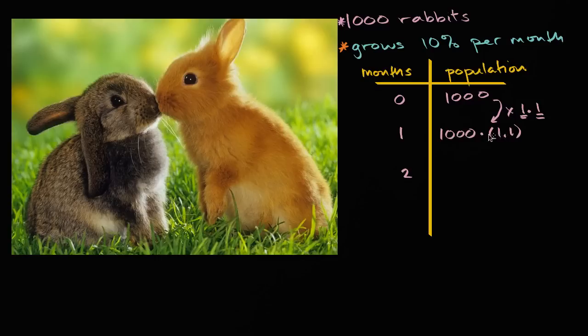Now let's think about what happens as we go to month two. Well, it's going to be the population that we started at the beginning of the month times 1.1 again. So it's going to be the population at the beginning of the month, which we have right over there. But then we're going to multiply by 1.1 again. Or we can just say that this is 1,000 times 1.1 squared.